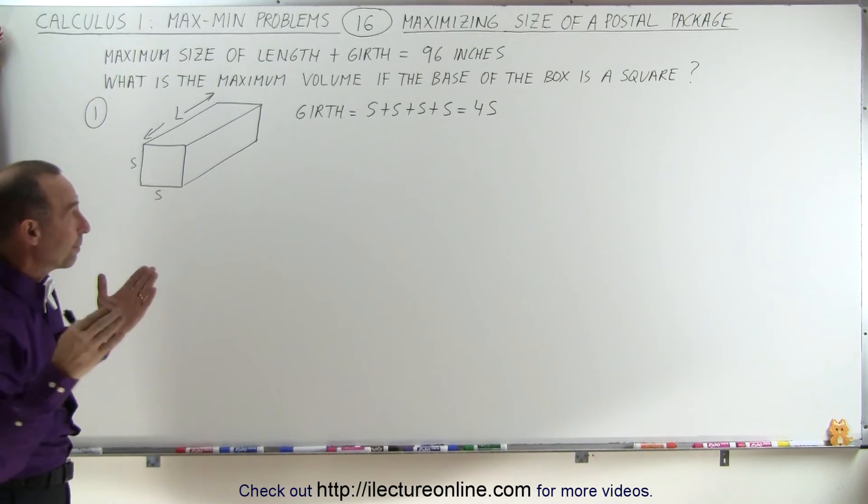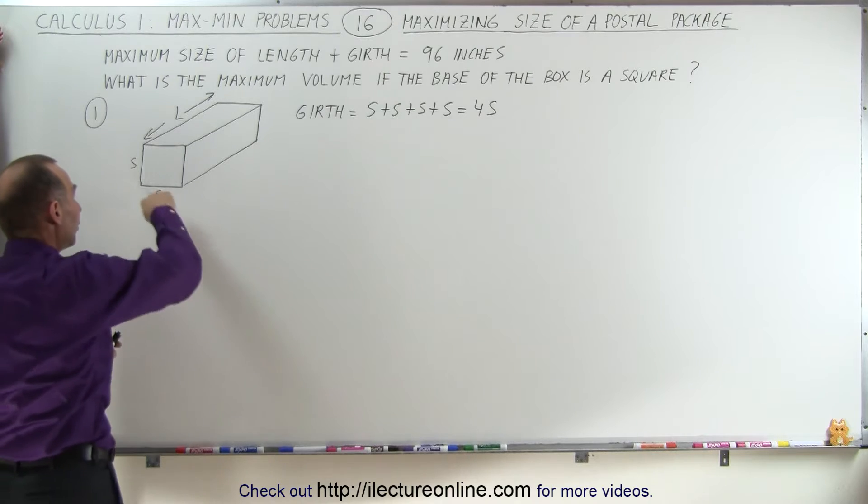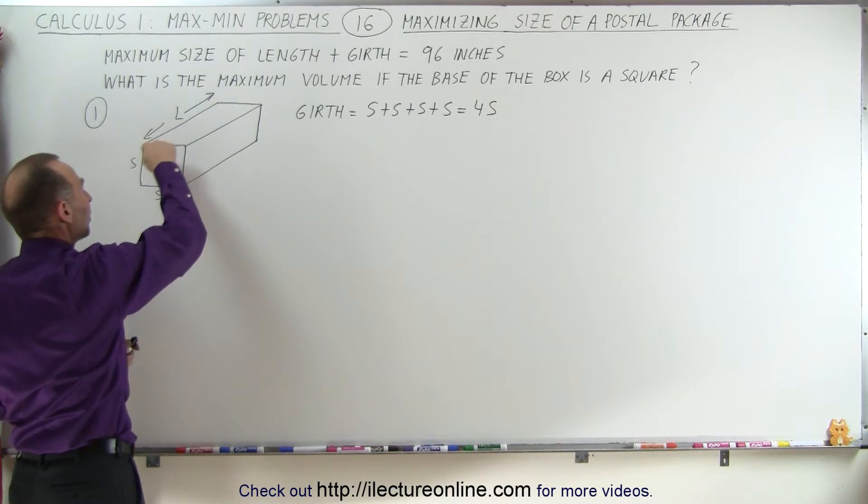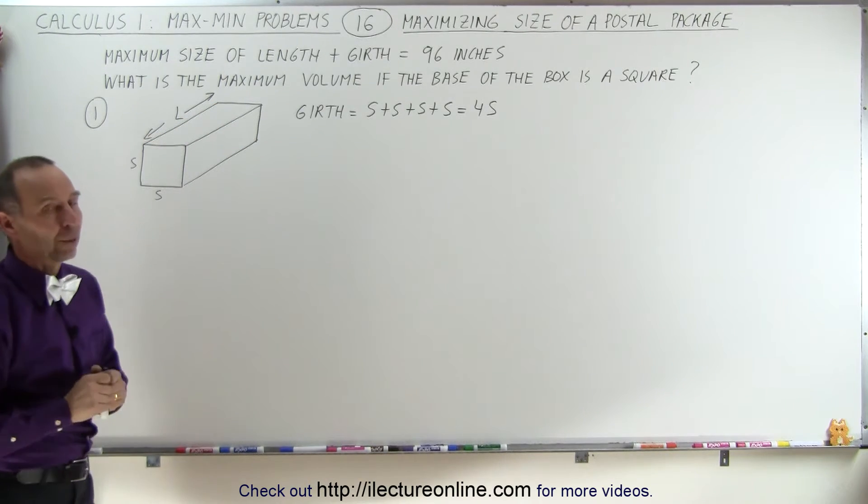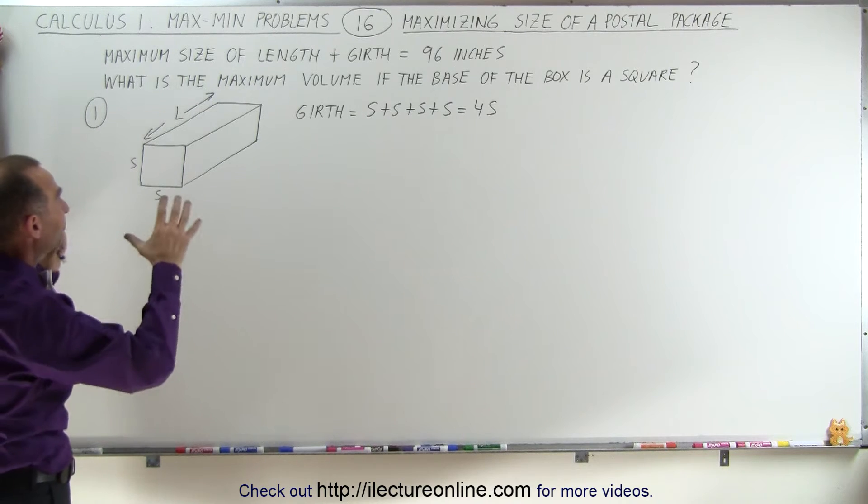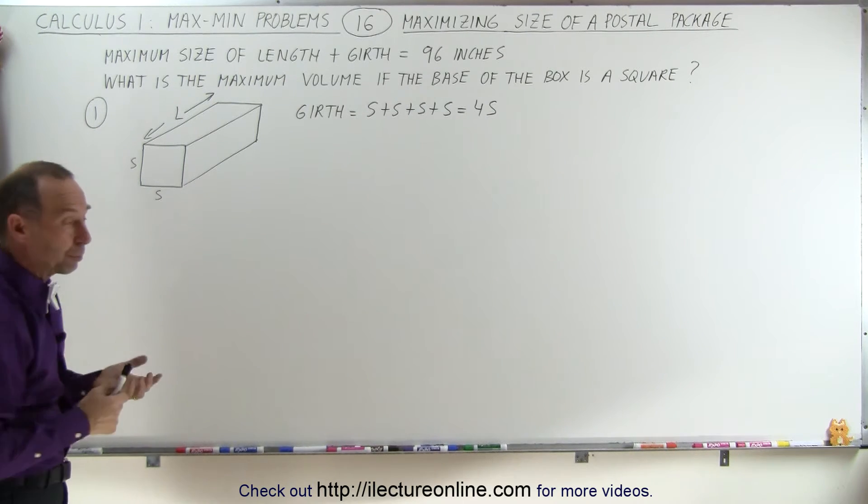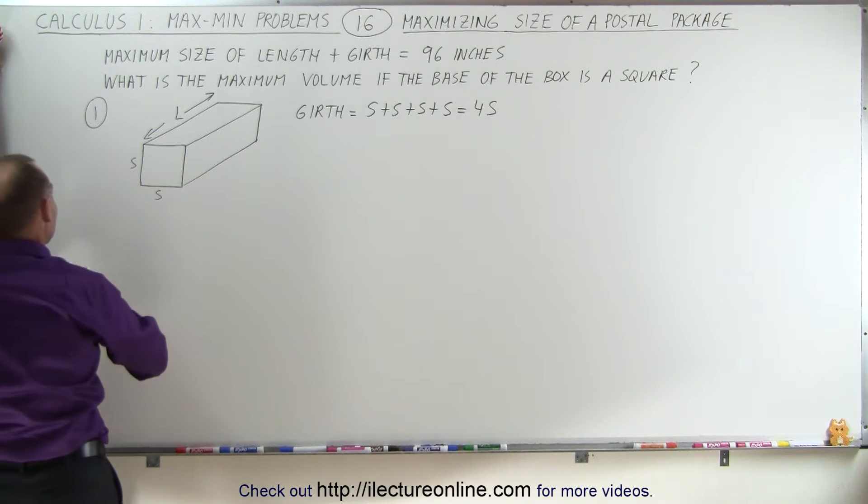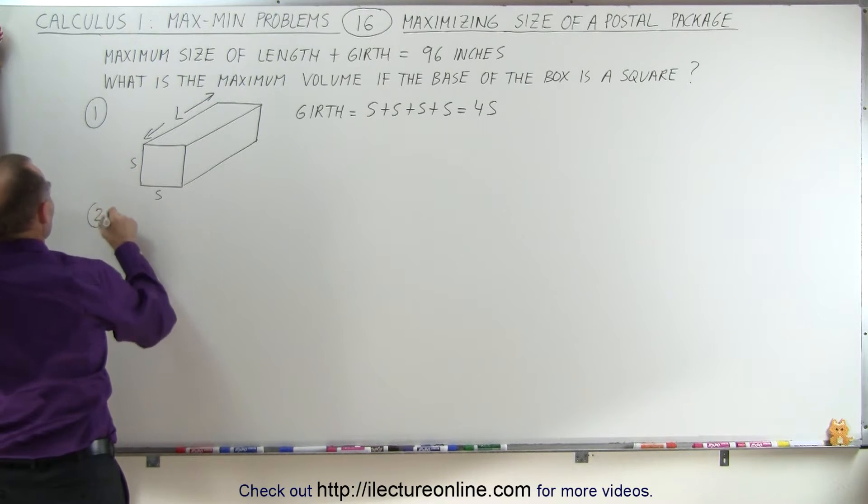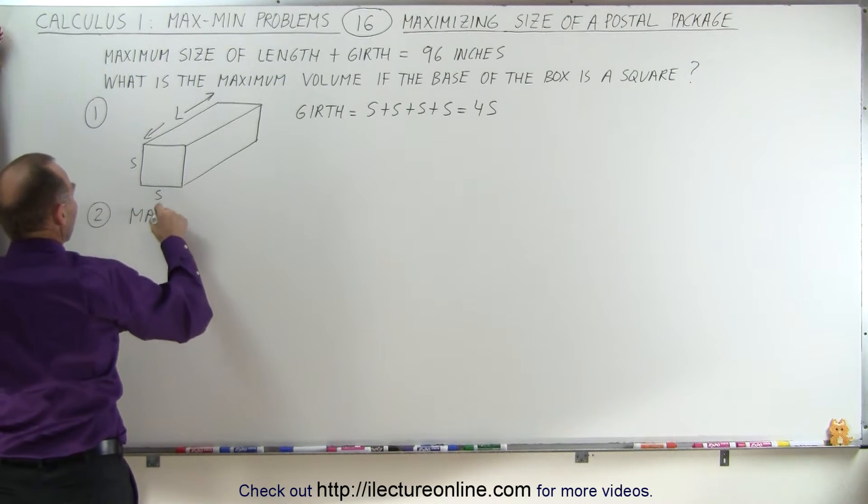The total dimension measured would be the girth, 4s, plus the length L. What we're trying to do here is maximize the volume of this package. That's number 2: we're identifying what we're trying to maximize. In this case, we're maximizing the volume.